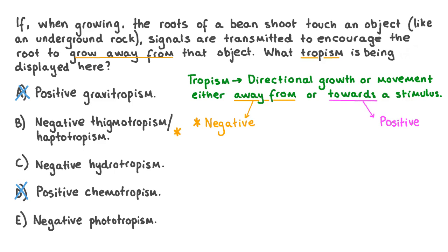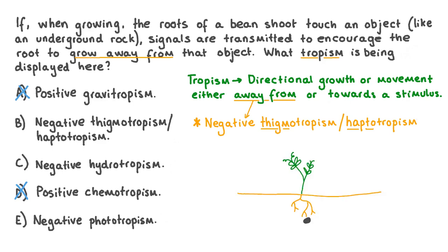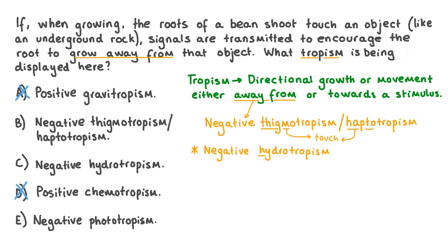Breaking down the remaining options: the prefix 'thigmo' and 'hapto' both mean touch, which explains how roots of plants like legumes rely on their sense of touch to grow into soil without encountering resistance. When roots come into contact with solid objects underground like rocks, signals are transmitted to encourage them to grow away — helping roots find areas of soil free to expand and increasing their ability to take up minerals and water. The prefix 'hydro' means water, and 'photo' means light — neither refers to a touch stimulus. Therefore, the example describes negative thigmatropism, or haptotropism.